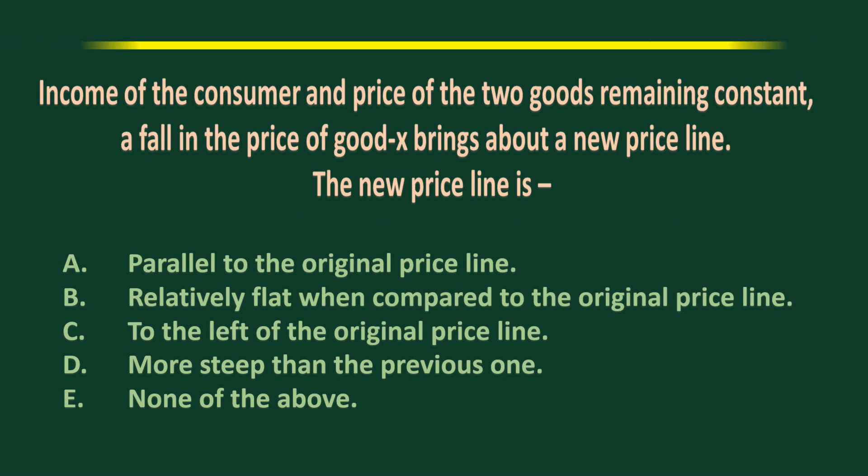Choose the correct answer. Income of the consumer and the price of good Y remaining constant, a fall in the price of good X brings about a new price line. The new price line is: A, parallel to the original price line; B, relatively flat; C, to the left of the original price line; D, more steep than the previous one; E, none of the above.